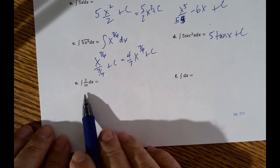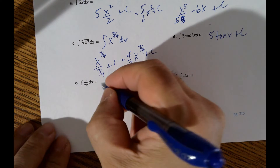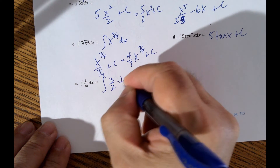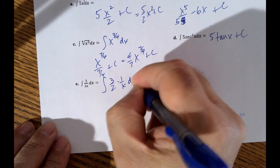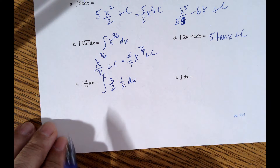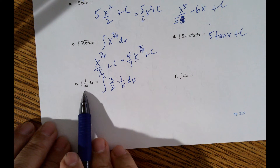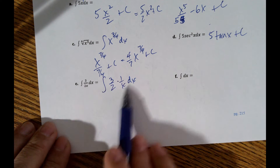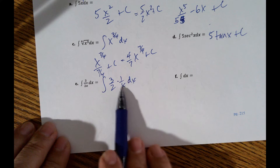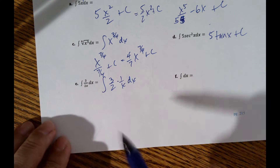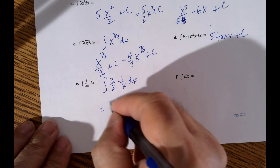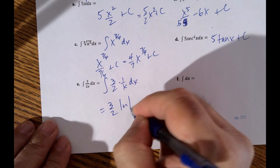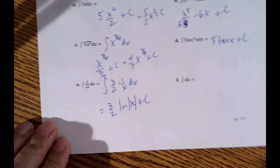I'm going to rewrite 3 over 2x as 3 halves times 1 over x dx — separating it so you can see the 1 over x. That becomes 3 halves times the natural log of the absolute value of x plus a constant.